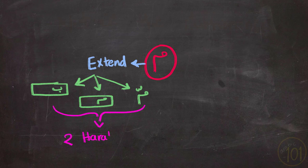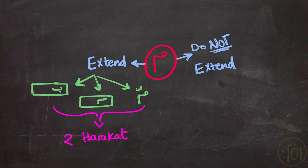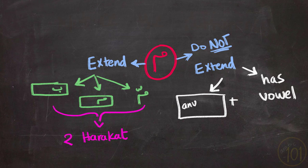And Meem is not lengthened and normally pronounced if it has a vowel on top or underneath, and when it is followed by anything except Ba' or Meem.